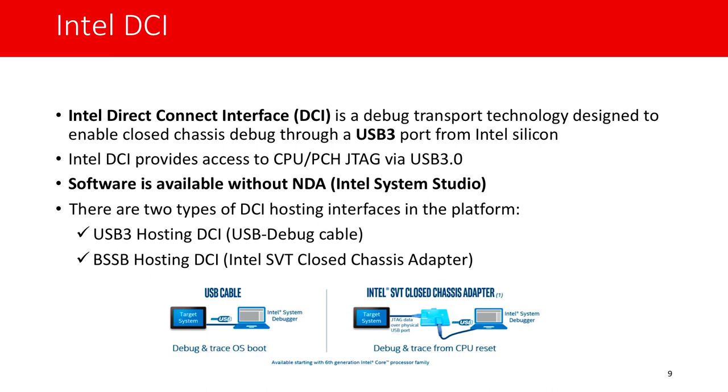Intel hat die Direct Connect Interface Technologie eingeführt. Die Beschreibung kann in der Dokumentation und in unserer Arbeit gefunden werden. Das Diagramm zeigt zwei Arten von Verbindungen: wenn man ein spezifisches Gerät benutzt, oder ein normales USB-3-Kabel benutzt. Das Zielsystem braucht keine spezielle Maschine. Diese Technologie funktioniert direkt ohne weiteres und man kann dieses JTAG durch USB-3-Ports nutzen. Es funktioniert auf verschiedenen Plattformen.